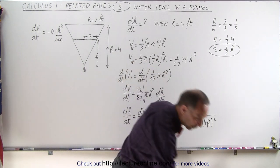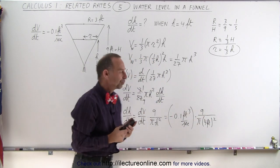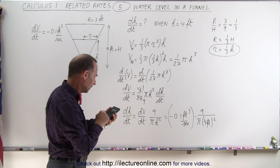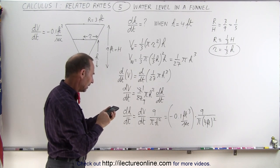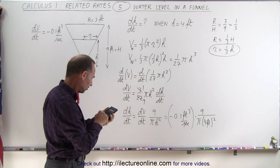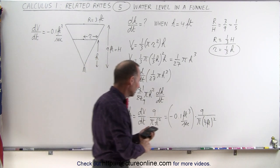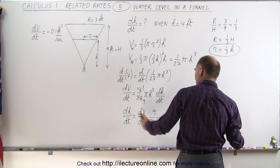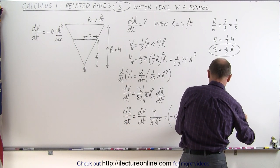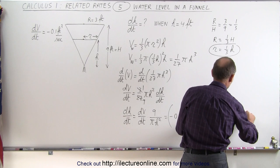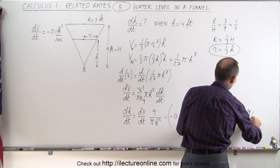Now with a calculator, we can figure out what that is: 0.1 times 9 divided by pi and divided by 4 squared, which is 16. And that gives us dh dt as negative 0.0179 feet per second.